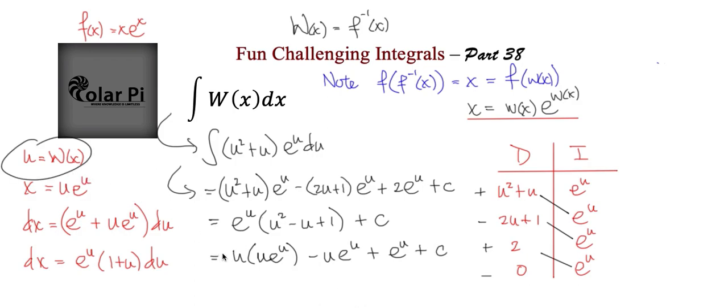Remember, u is W of x. So this here is W of x. And this here is x, as we have there. And this guy will have to be e to the W of x. And there's not much we could do about that, but that's not a problem.